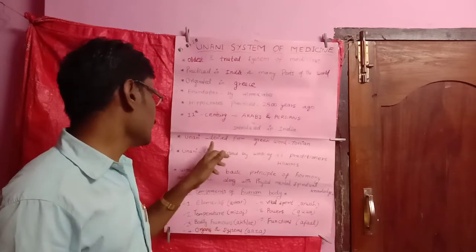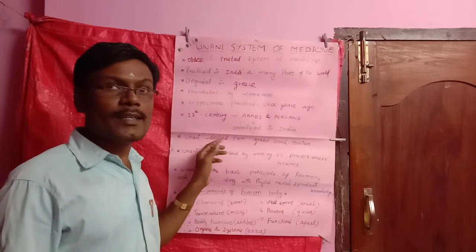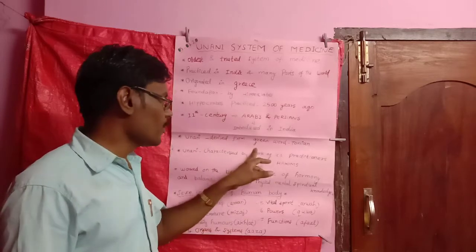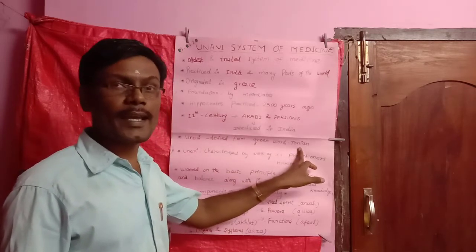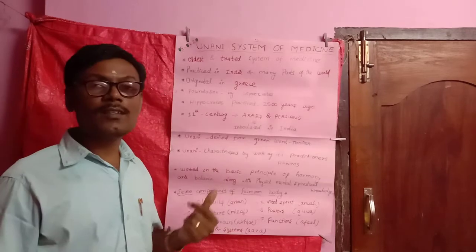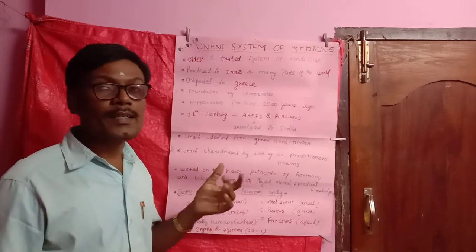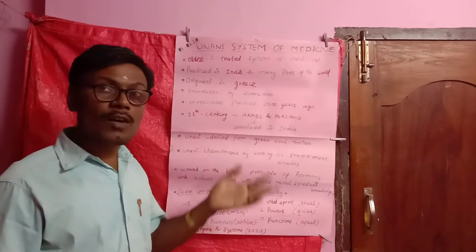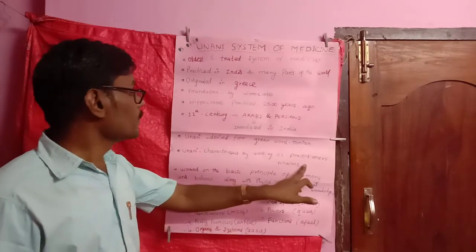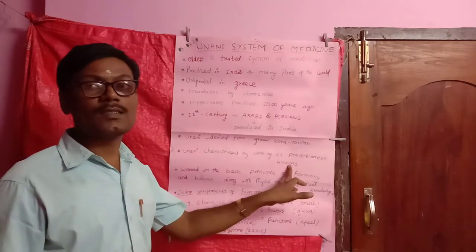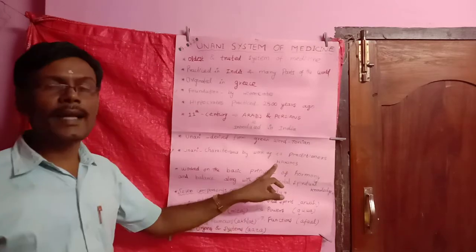The word Unani was derived from the Greek term named Ionian — spelled I-O-N-I-A-N. The Unani System of Medicine was characterized by the work of its practitioners, who were called Hakims — H-A-K-I-M-S.